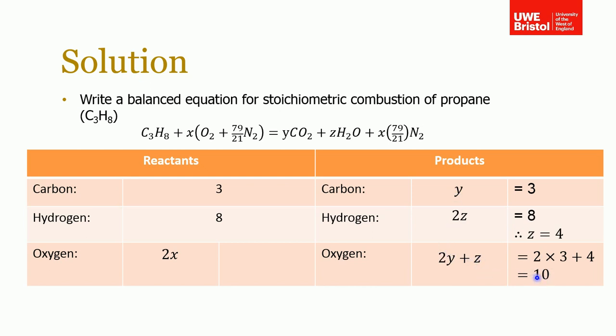10 on this side, so we must have 10 on this side. Therefore X is 5. If we plug X, Y, and Z back into our equation at the top, we can now find we've got a nicely balanced equation.